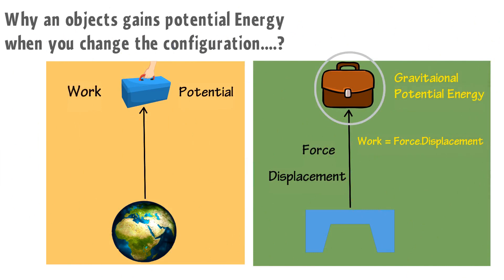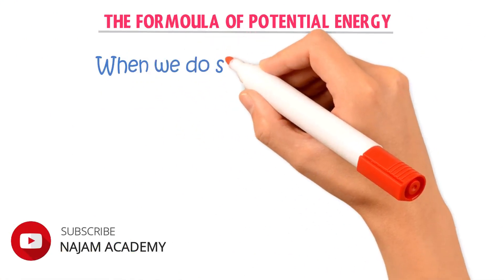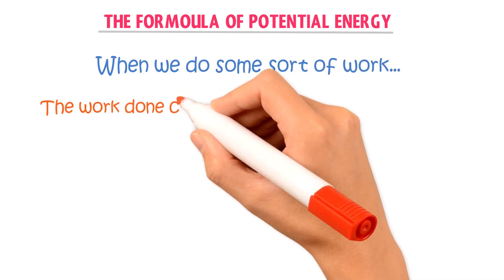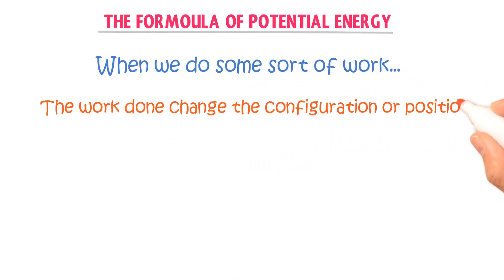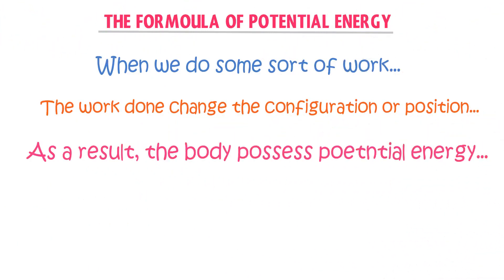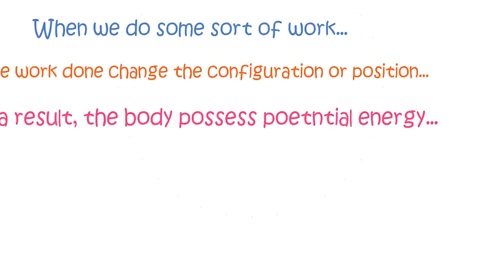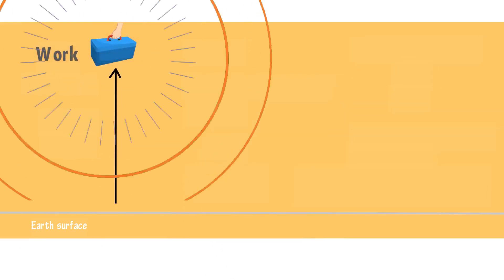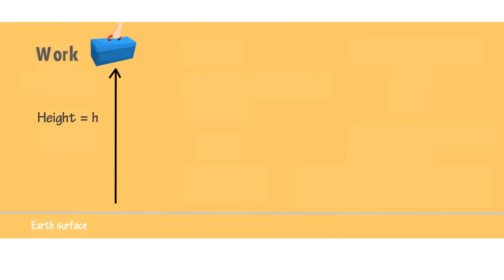We call this energy Gravitational Potential Energy. Now let me derive the formula of Potential Energy. When we do some sort of work on an object and this work done changes the position or configuration of an object, we say that the body then possesses Potential Energy. For example, when you lift an object above the Earth's surface, you do some sort of work and the object gains a particular height H.